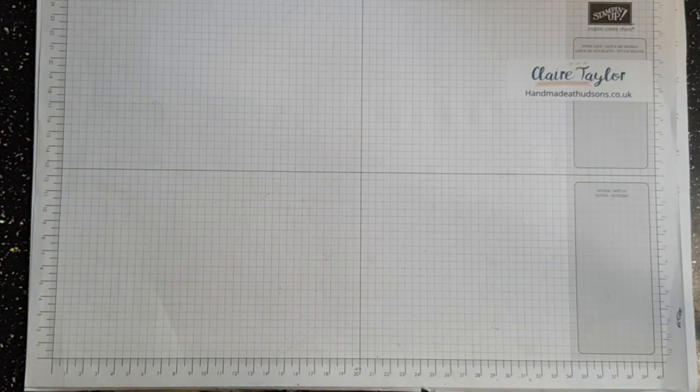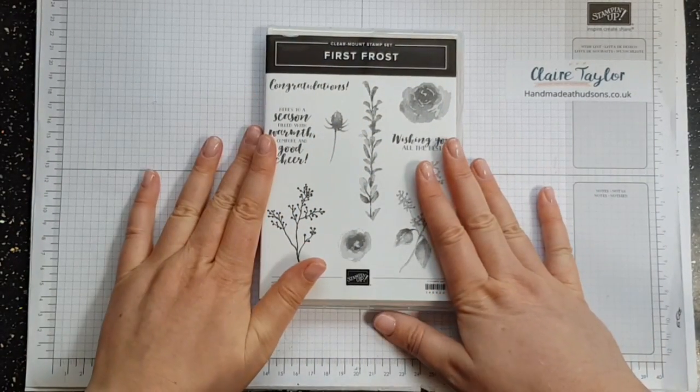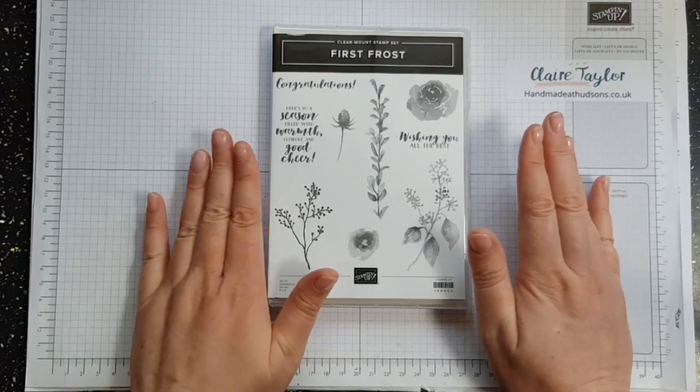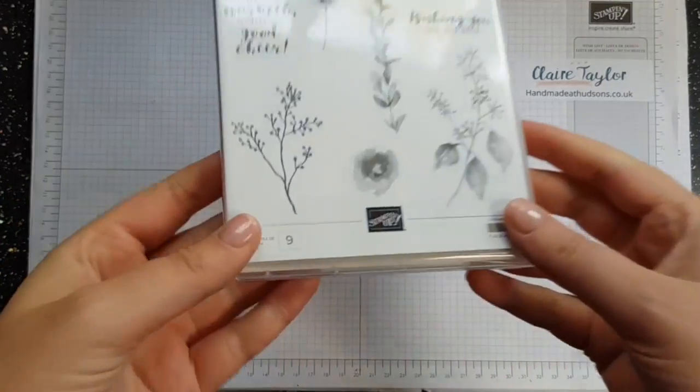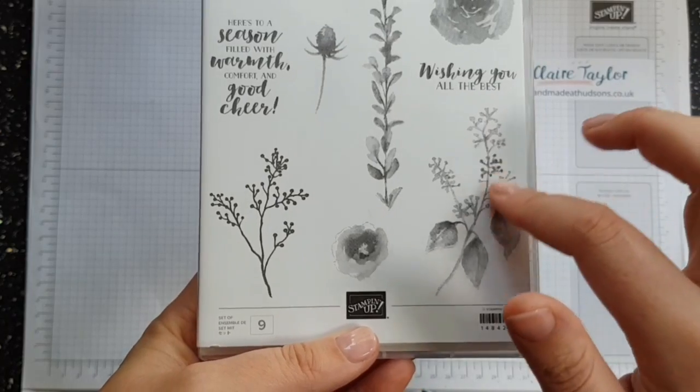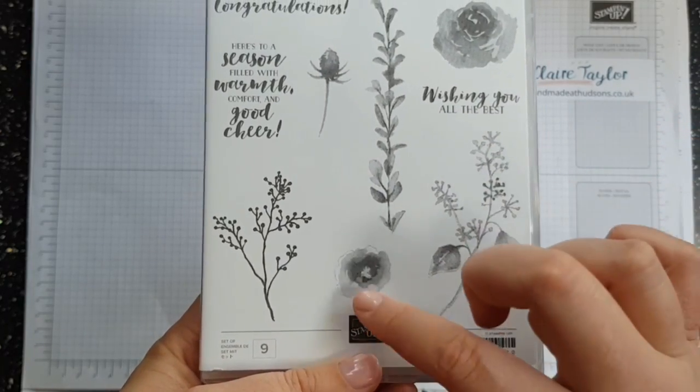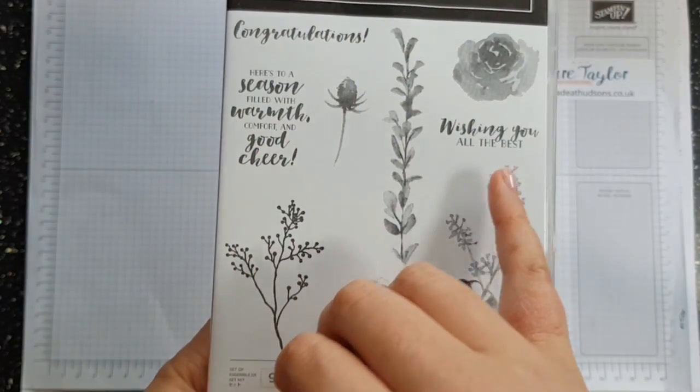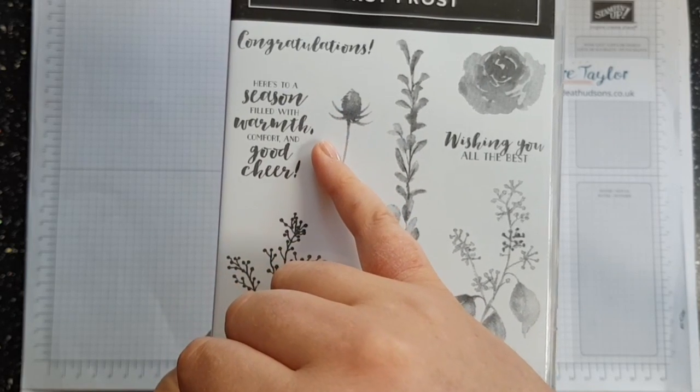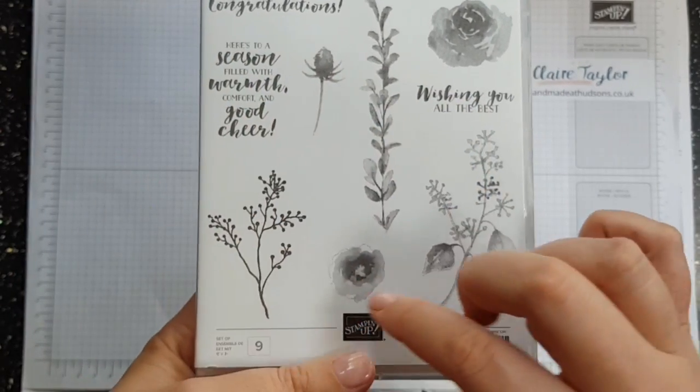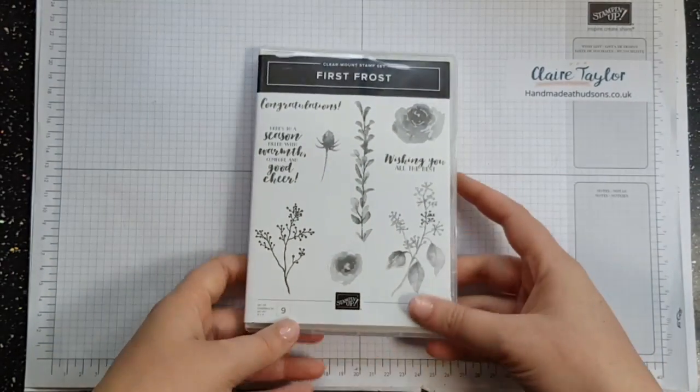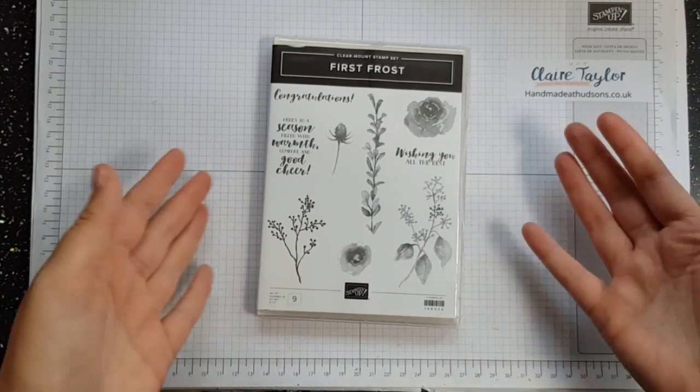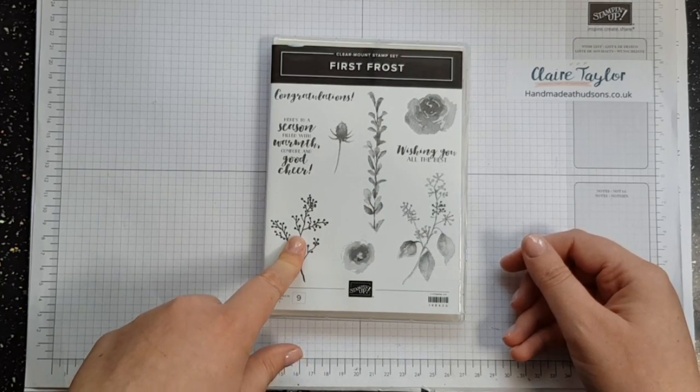We've got the First Frost from the frosted floral suite, this is amazing. This is one of the things that I was like oh I really need that. There are a few things that I love, I love this flourish or flower here, I love these roses. And I've got congratulations, wishing you all the best, here's to a season filled with warmth comfort and good cheer. So you could use it as a Christmas card or you could use it as something else because it doesn't necessarily mean that it's a Christmas season, it could be any season.